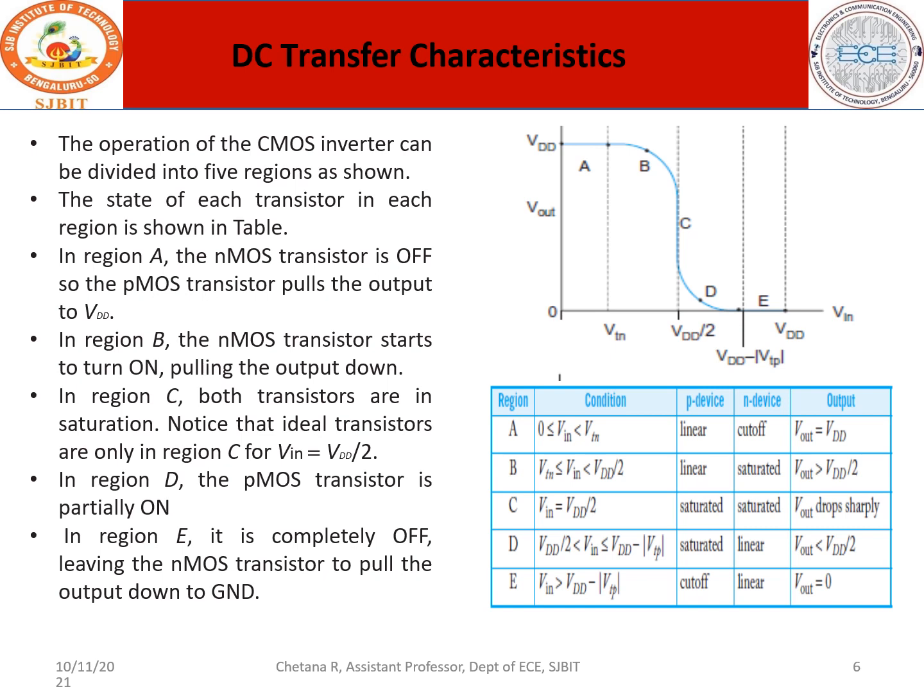In region A, when input is less than VTN, the NMOS is off. For PMOS to be off, the input should be greater than VDD minus VTP, but in region A the input is less than VDD minus VTP, so the PMOS device is ON. The PMOS is in the linear region.